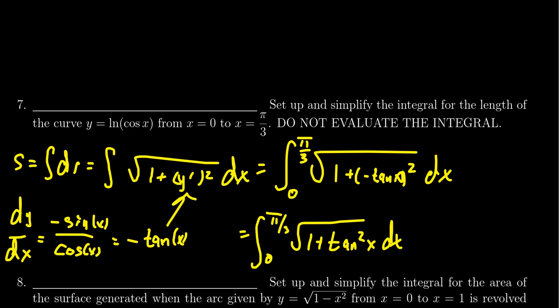And so by the Pythagorean identity, 1 plus tangent squared is actually the same thing as secant squared. So we end up with the square root of secant squared. And that gives us our last simplification.